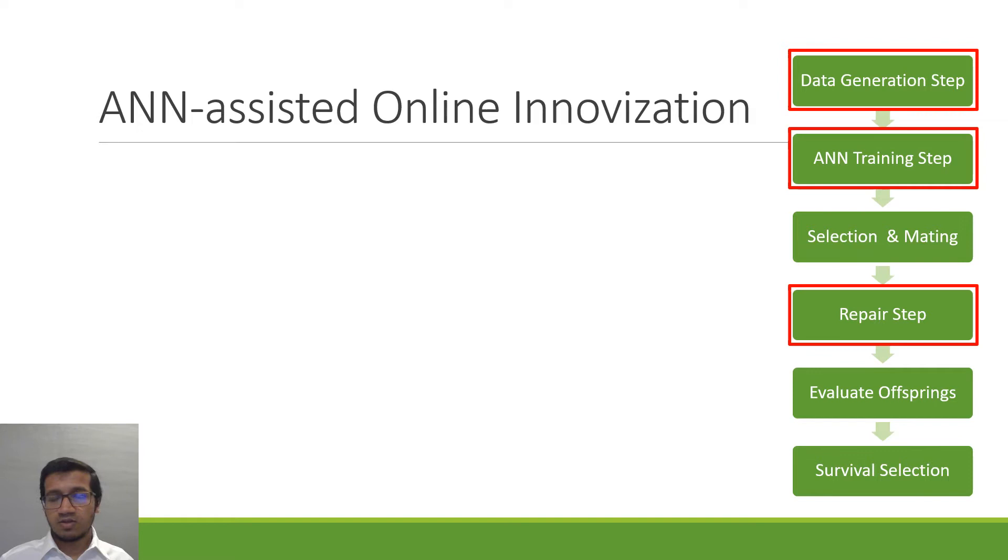So on the right side we can see a flowchart in which at any generation of the EMO algorithm we can identify three different steps marked in red which are not a normal step in an EMO algorithm.